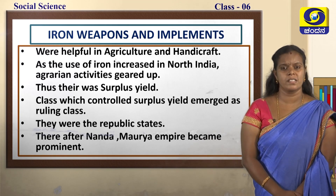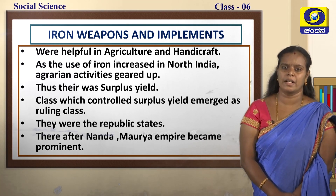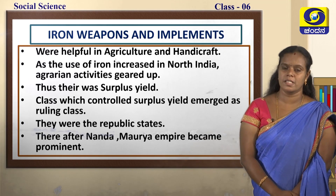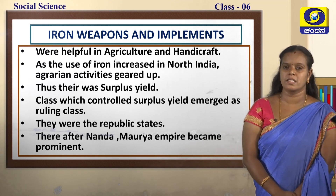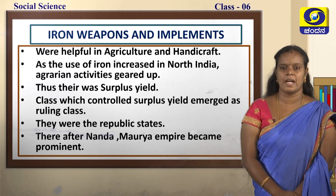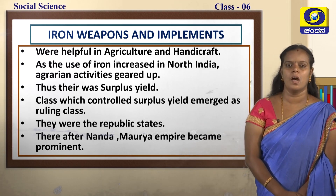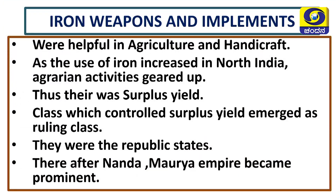Iron weapons were helpful in agriculture as well as handicraft — things made by hand. As the use of iron increased in North India, agricultural activities also geared up. There was a surplus yield — the yield left over after the requirement. The classes which controlled the surplus yield emerged as ruling classes. They were the republic states. Thereafter, the Nanda and Mauryan Empires became prominent.